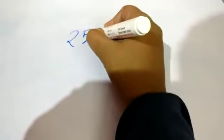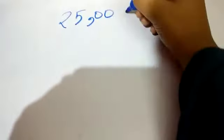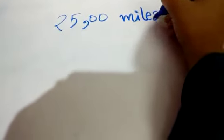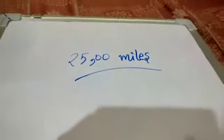The earth has a mass of 25,000 miles. That's a big number, isn't it?